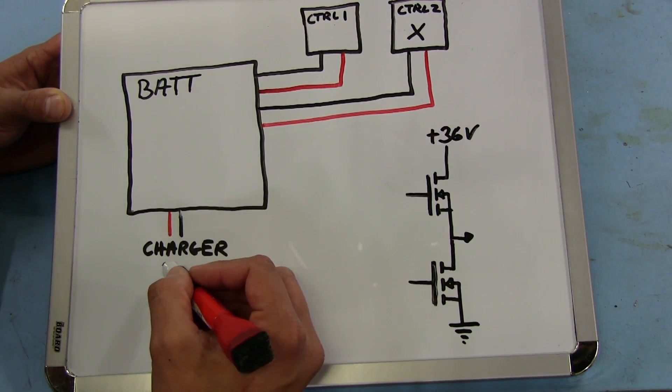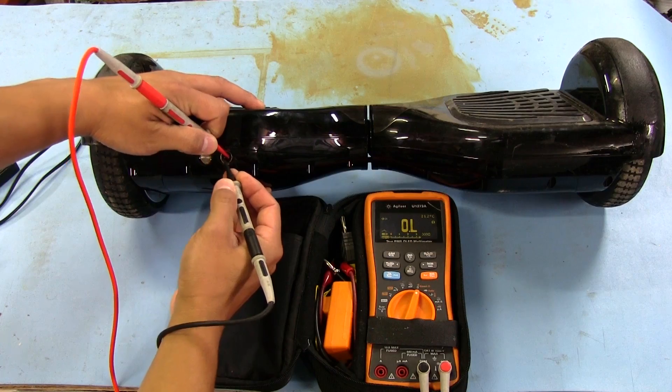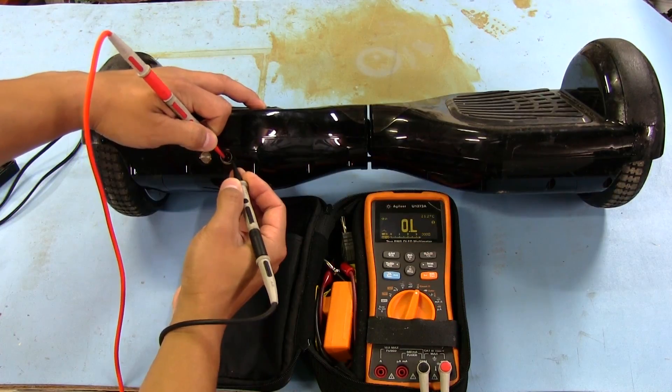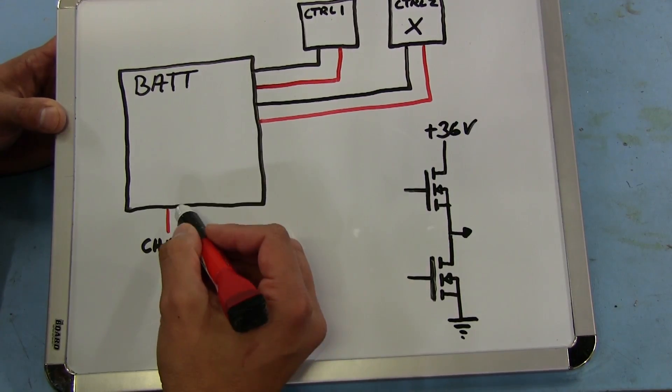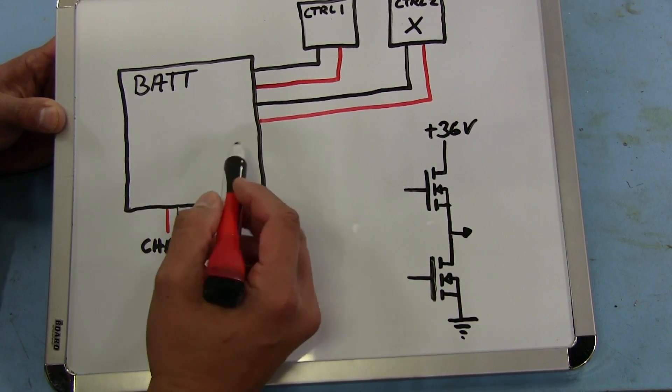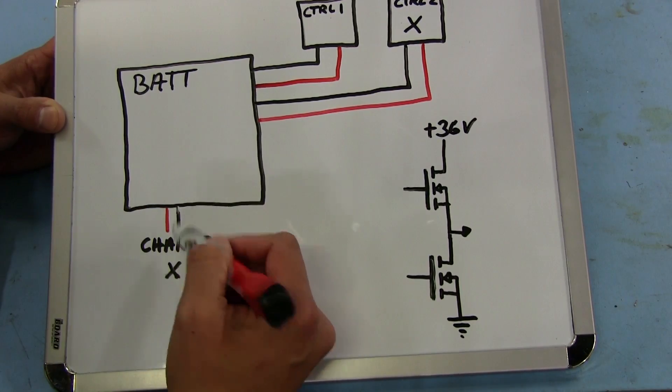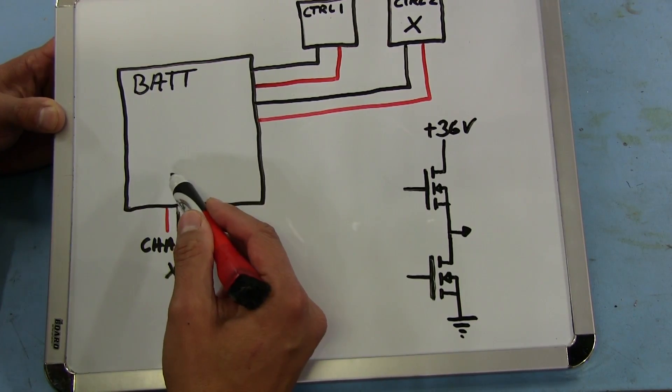If you remember, when I measured the continuity at the charging port, it was showing as a short. That's when I said I was hoping there was nothing wrong inside the battery because we were measuring a short directly into the battery.